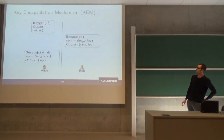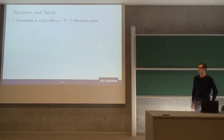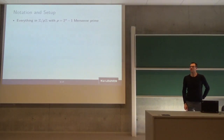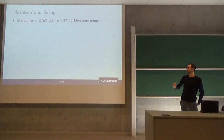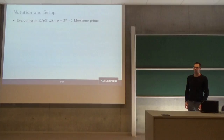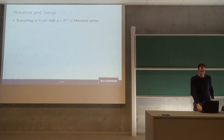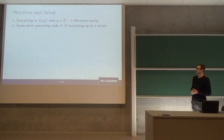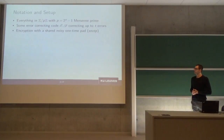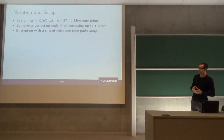We're going to do this with Mersenne numbers — specifically a Mersenne prime, a prime of the form 2^n minus 1. All calculations will be in Z/pZ — just assume everything is mod p unless stated otherwise. We also want an error-correcting code that can correct up to a certain number of errors. And we need an encapsulation function — in our case we'll encrypt the symmetric key with a noisy one-time pad.